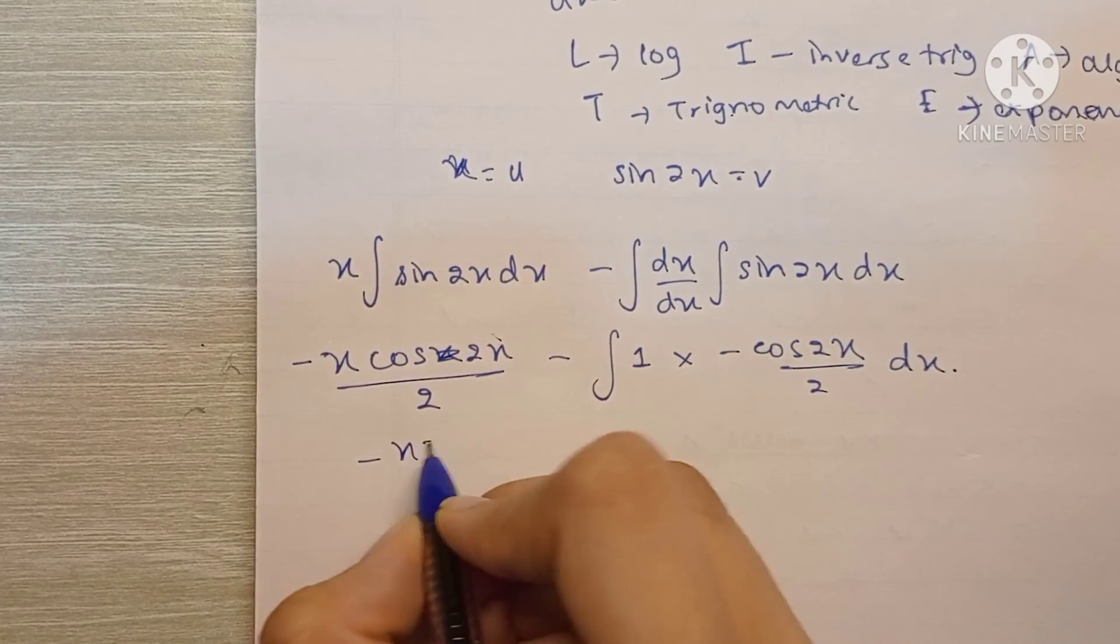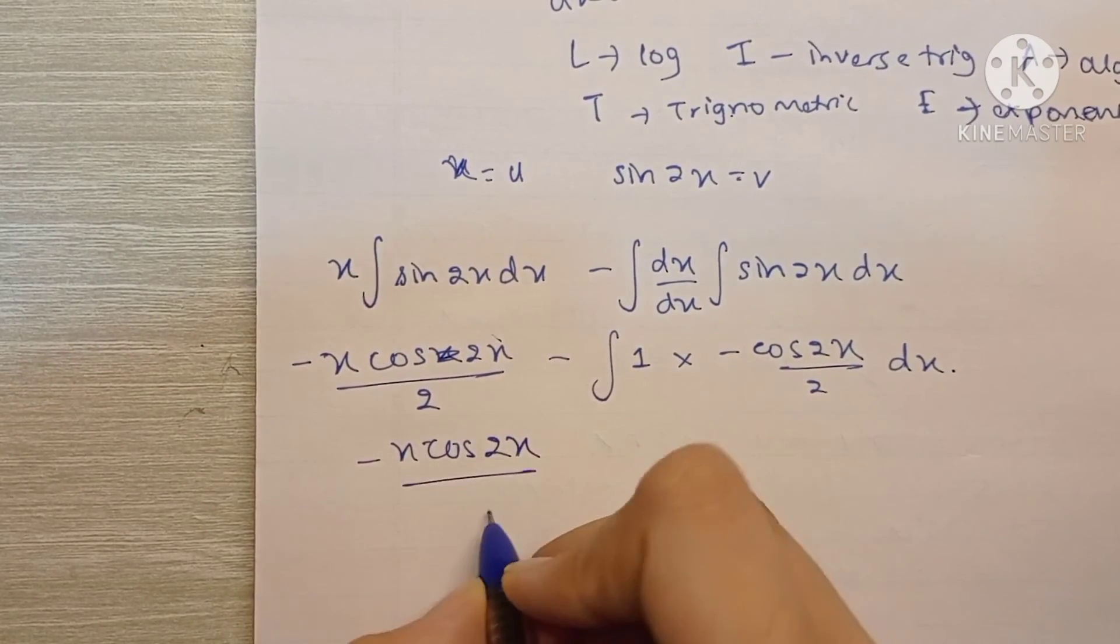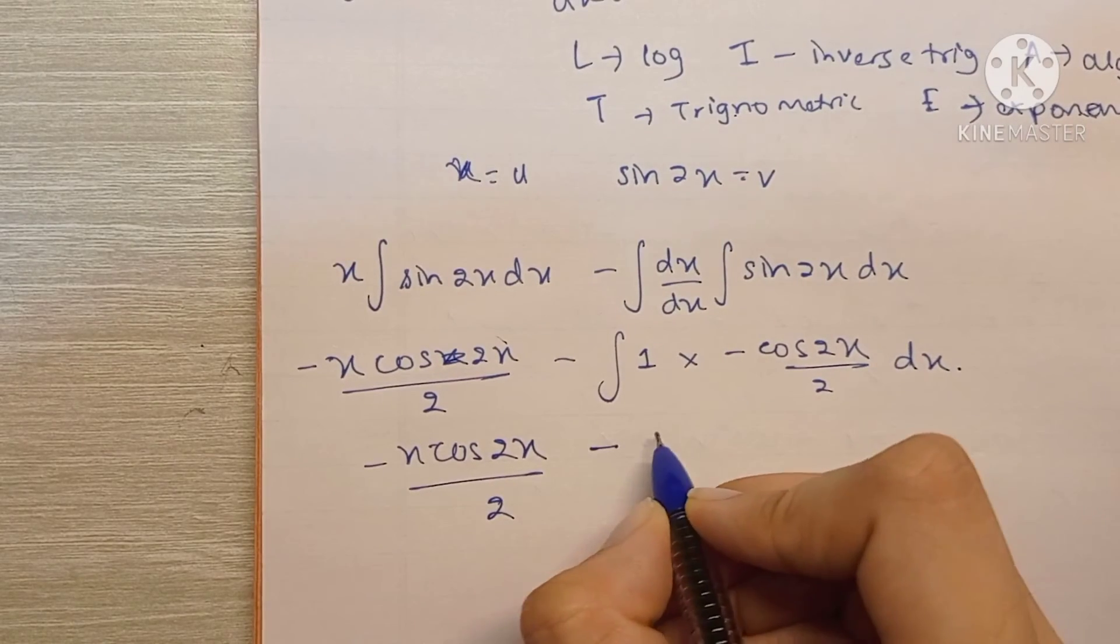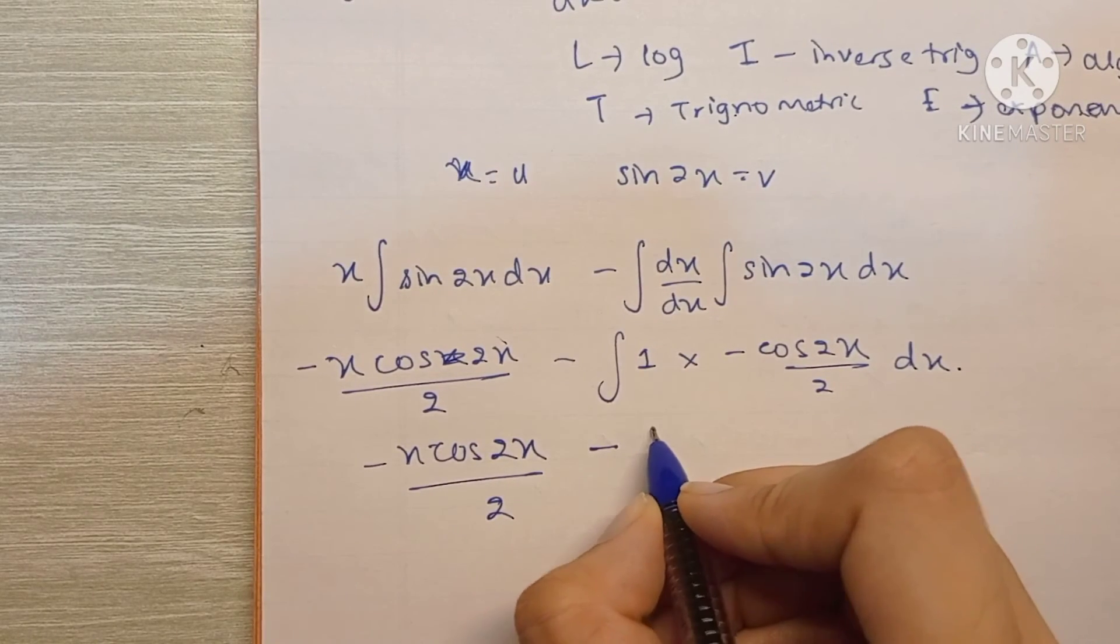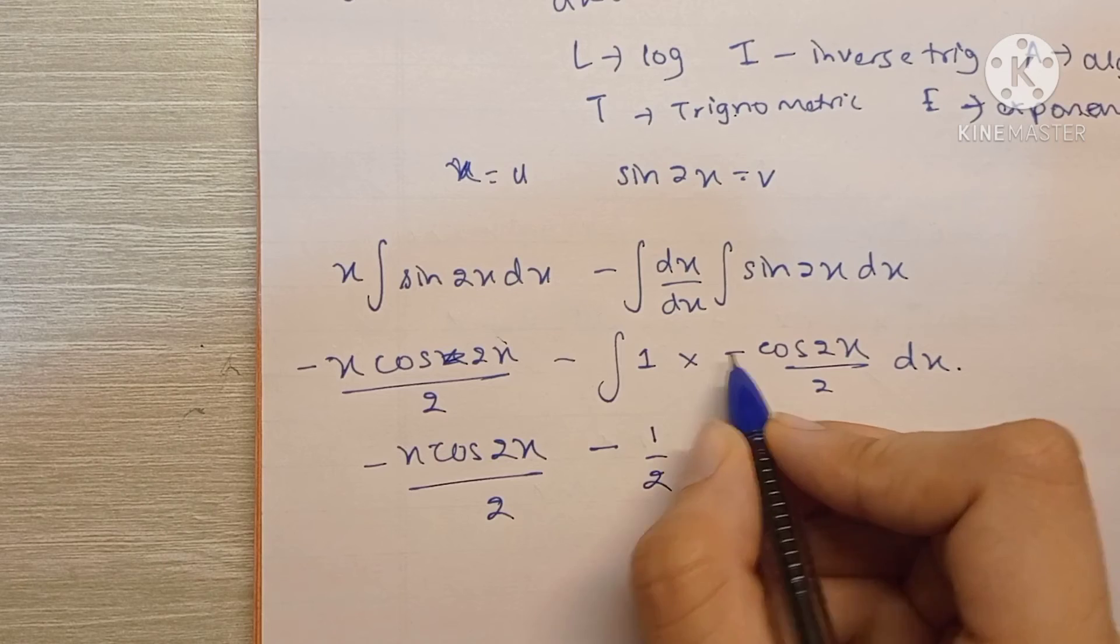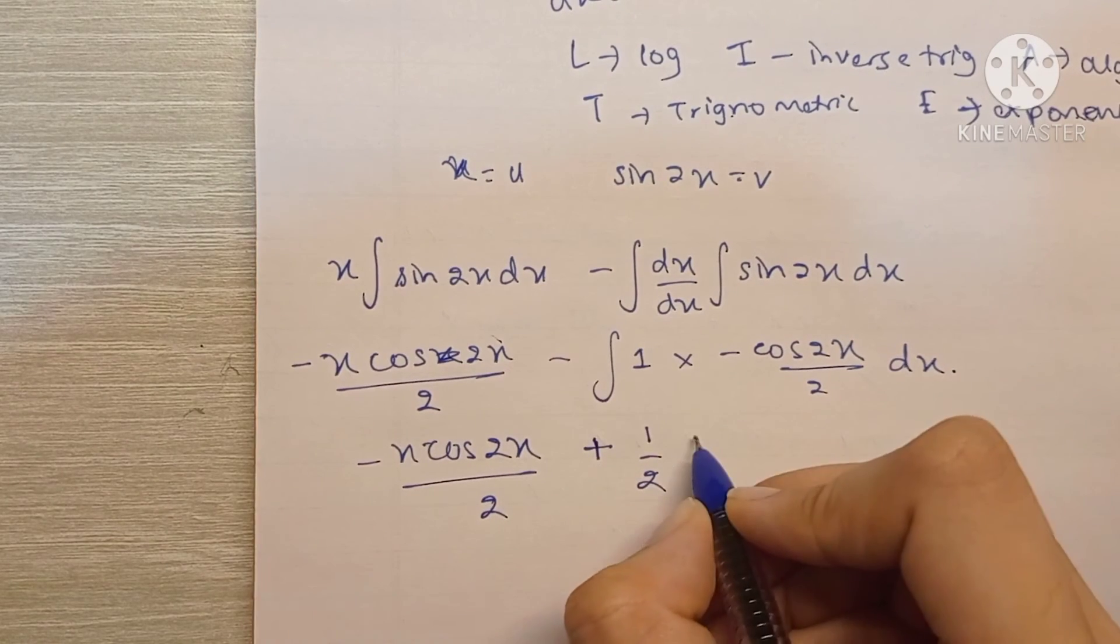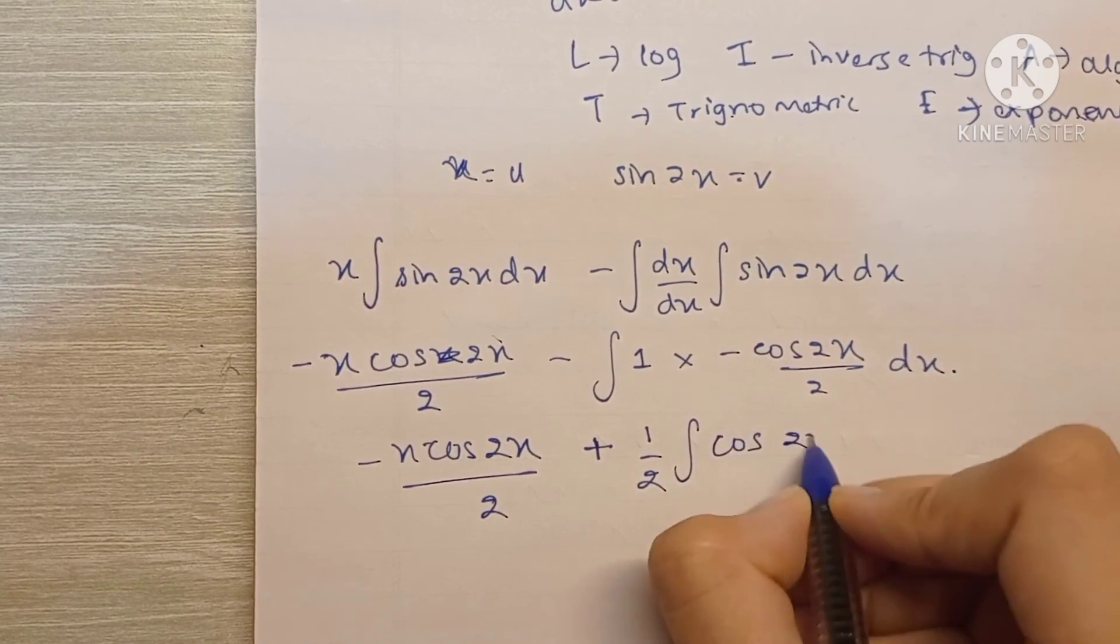So we have minus x cos 2x upon 2 minus. Let's take 1 by 2 outside because it's just a constant. Let's take the minus sign also outside, turn this into plus integral of cos 2x dx.